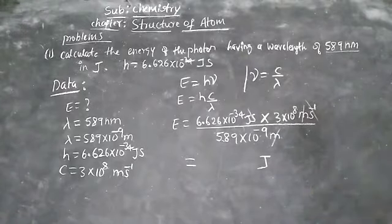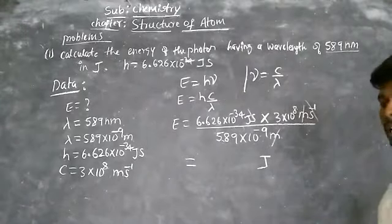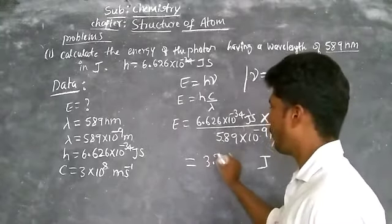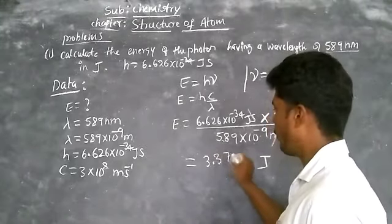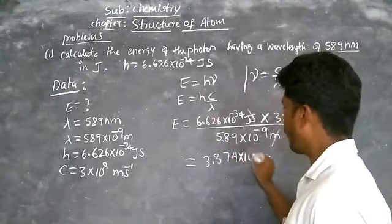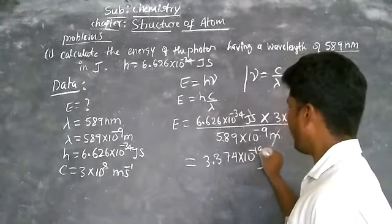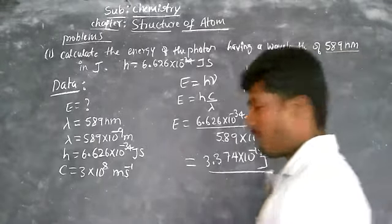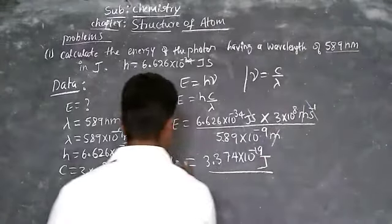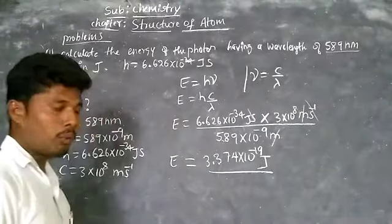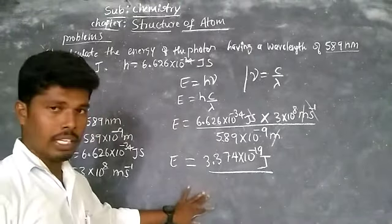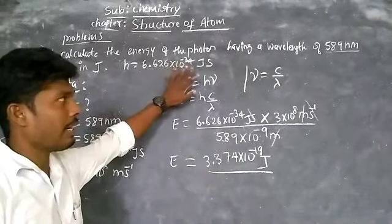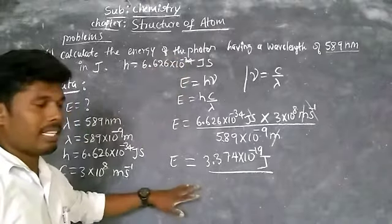After dividing and simplifying, you get 3.374 × 10⁻¹⁹ joules. This is the total energy of a photon when it is emitted or ejected from the surface of the metal.